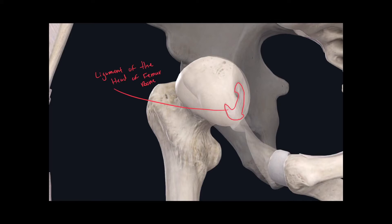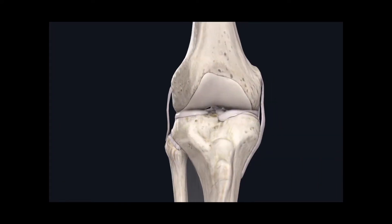If we head down inferiorly to the next joint, we find ourselves looking at the knee joint. The knee joint, also known as the genual joint, is by far the most complex joint found in the human body. The reason for that is because it has so many joint components. Before we go into those components, let's classify this joint. The knee joint is a bicondylar joint, because it has two condyles at the distal epiphysis of the femur bone that articulate with the condyles of the tibia. There are seven joint components in the knee joint.